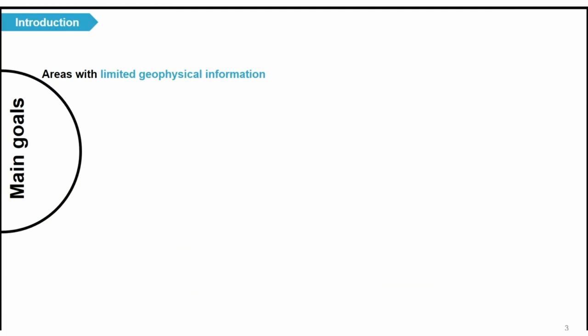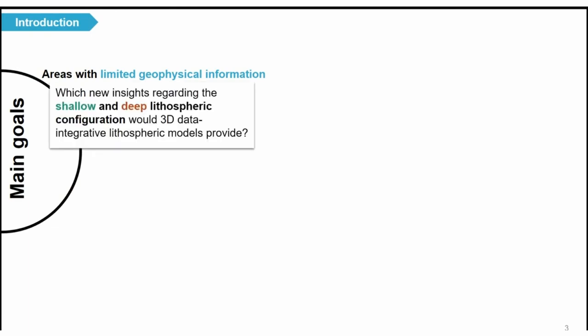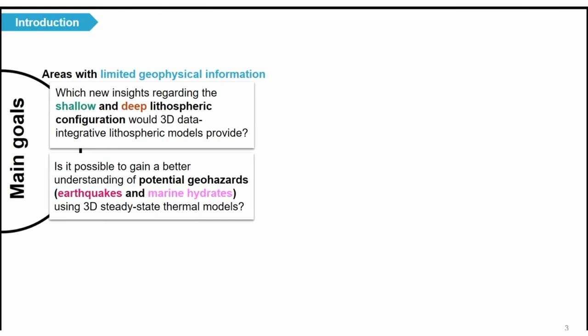The main idea of this talk is: if we consider that there are many regions where you have very limited geophysical information, all the tools and each percent are focused on these areas where there are a lot of open questions but not many data. The first question I'd like to answer is: which new insights regarding both shallow and deep structure can 3D data-integrative models provide? The second question is: is it possible to have better insights about potential geohazards — in this case earthquakes and marine hydrates — using digital free scale models, particularly by modeling a 3D thermal field?